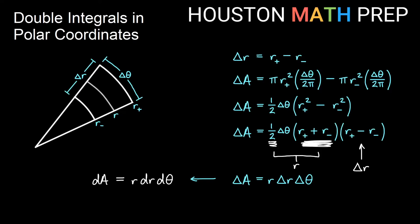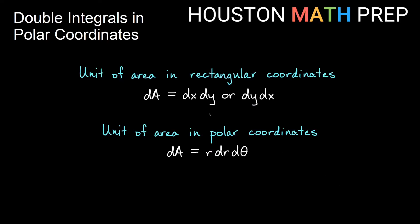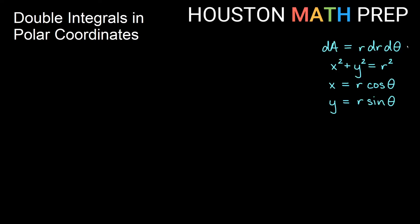So when we use a double integral in polar coordinates, instead of tacking on dx dy or dy dx, we tack on r dr d theta — note the extra r, not just dr d theta. Up here in the corner I'll leave our polar unit of area, along with some polar conversions in case it's been a while: x squared plus y squared equals r squared, x equals r cosine theta, and y equals r sine theta, in case we need to convert.